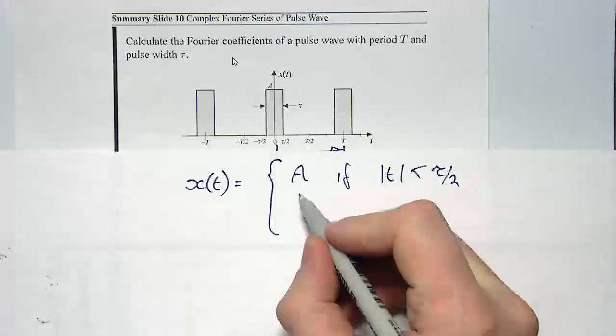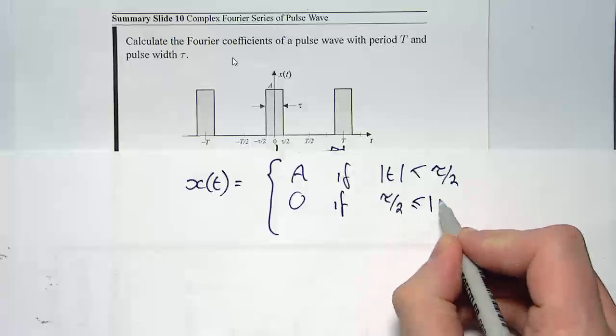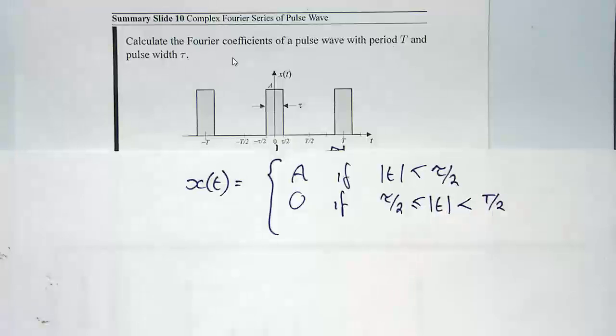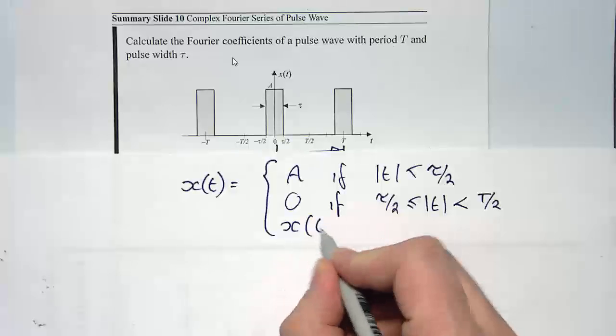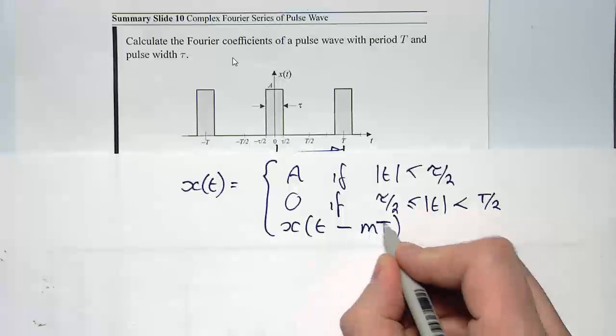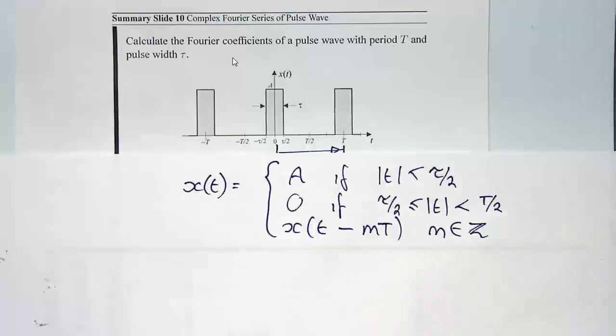It is 0 if the magnitude of T is between tau on 2 and plus T on 2, where T is a period. So that's actually just described a waveform within one period. But we need a third equation to describe it for all time. So I'm going to write that. Since the period is T, X of T is equal to X of T minus MT for any value of M, where M is an integer. And I use Z to denote the set of all integers.